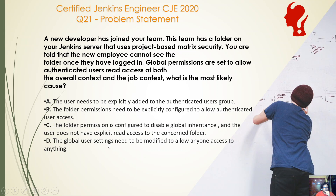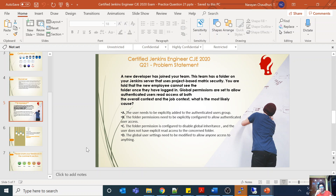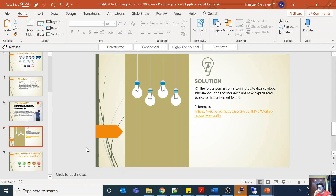Option D says the global user setting needs to be modified to allow anyone access to anything — this is not at all a secure practice. Anybody should not be allowed access to anything. So the answer is C. This matrix-based security is very, very important.